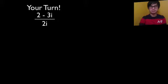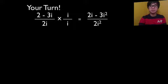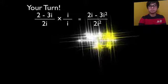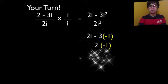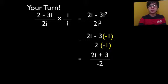Let's see if your answer is correct. Multiply both sides by i. Simplify the i squared. Change i squared to negative 1. And your final answer should be 2i plus 3 all over negative 2.